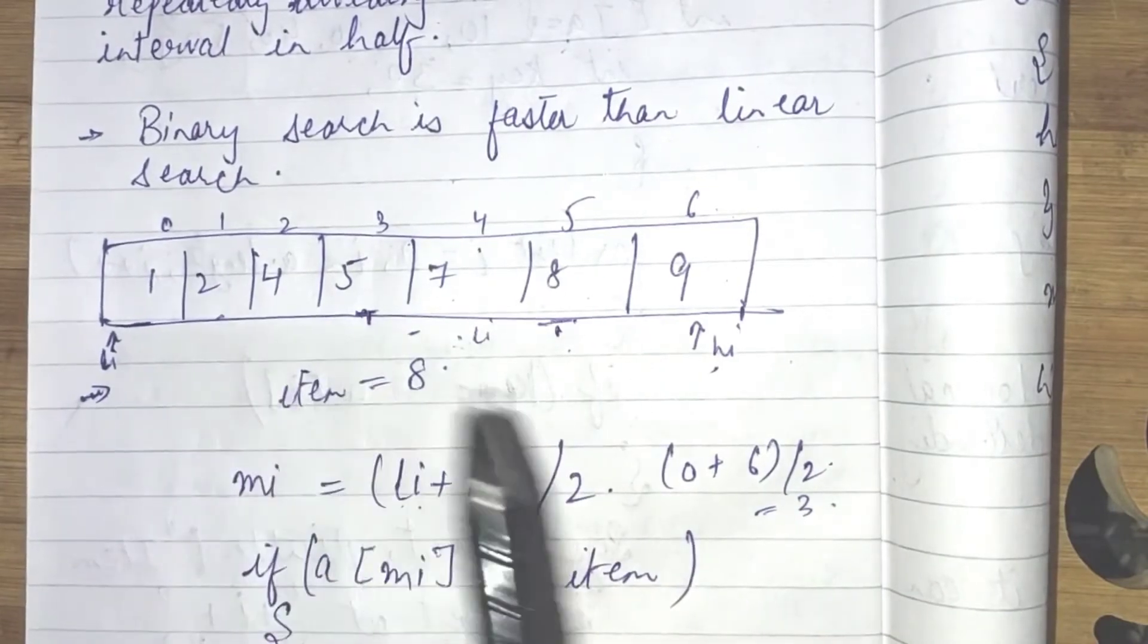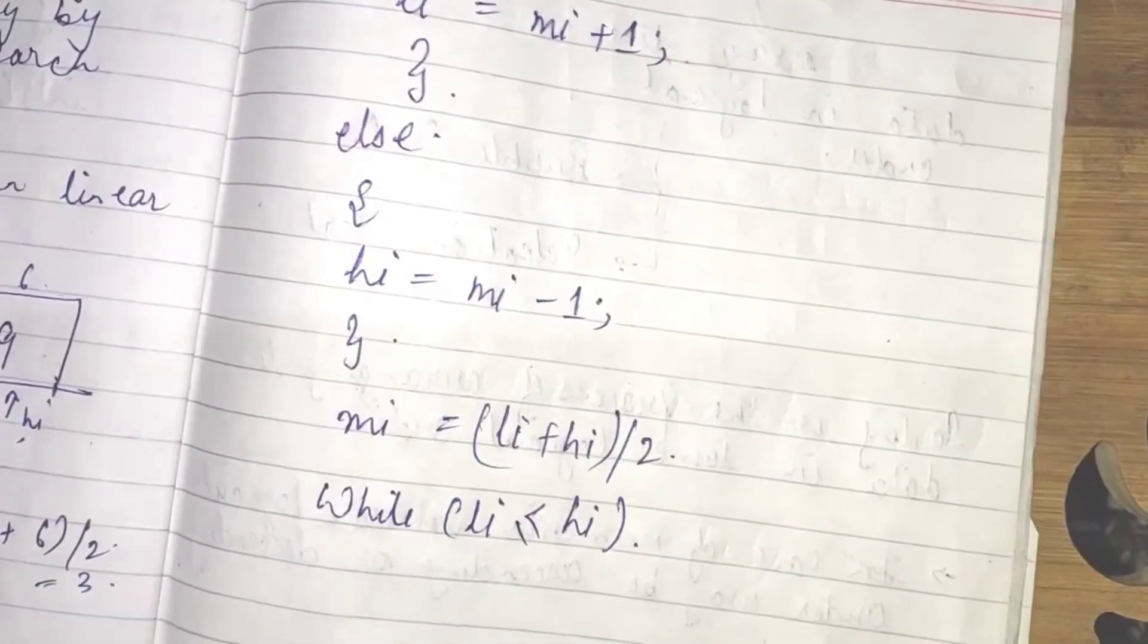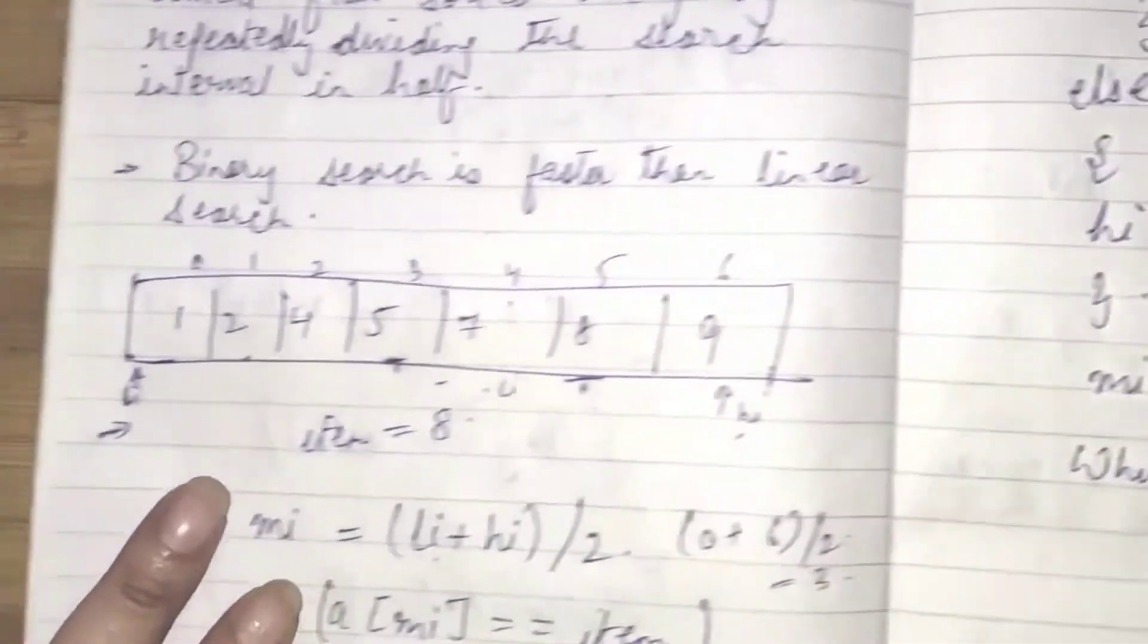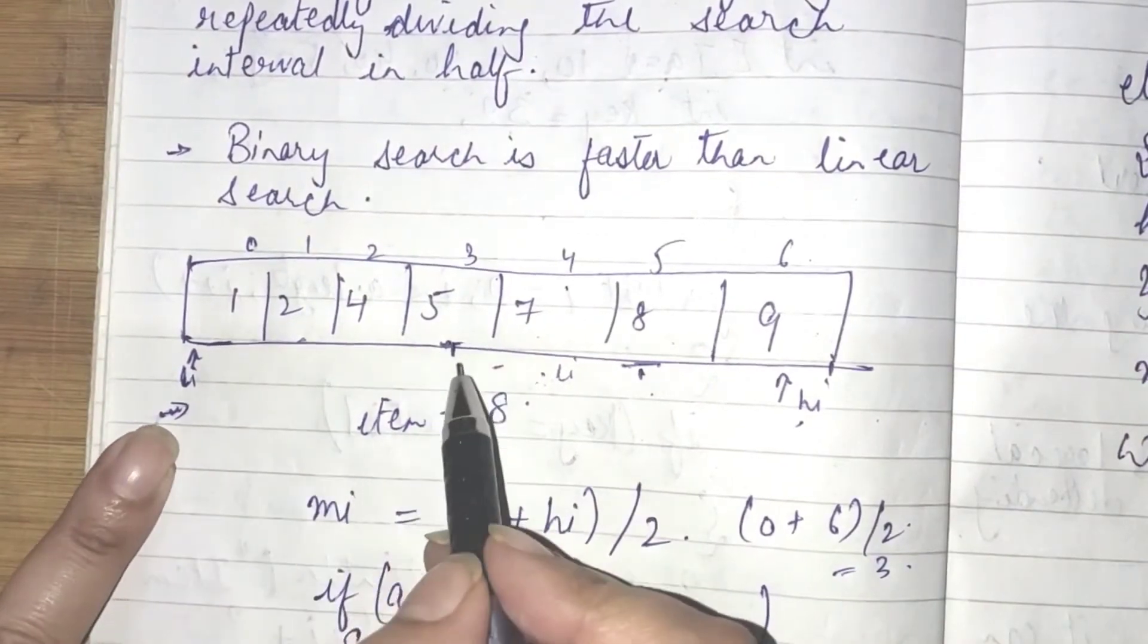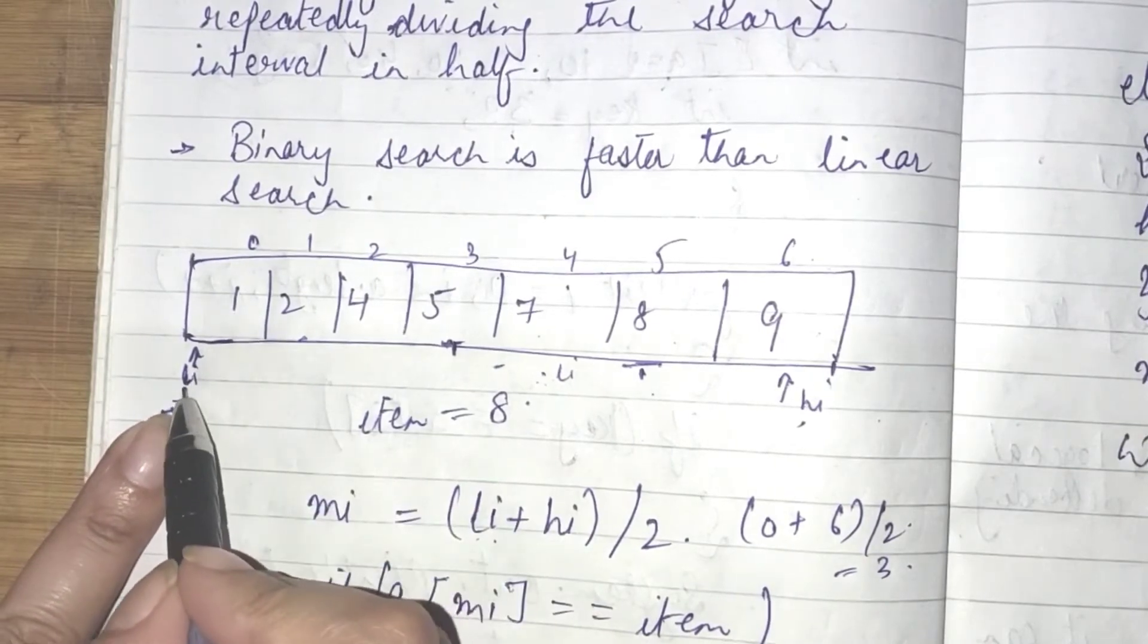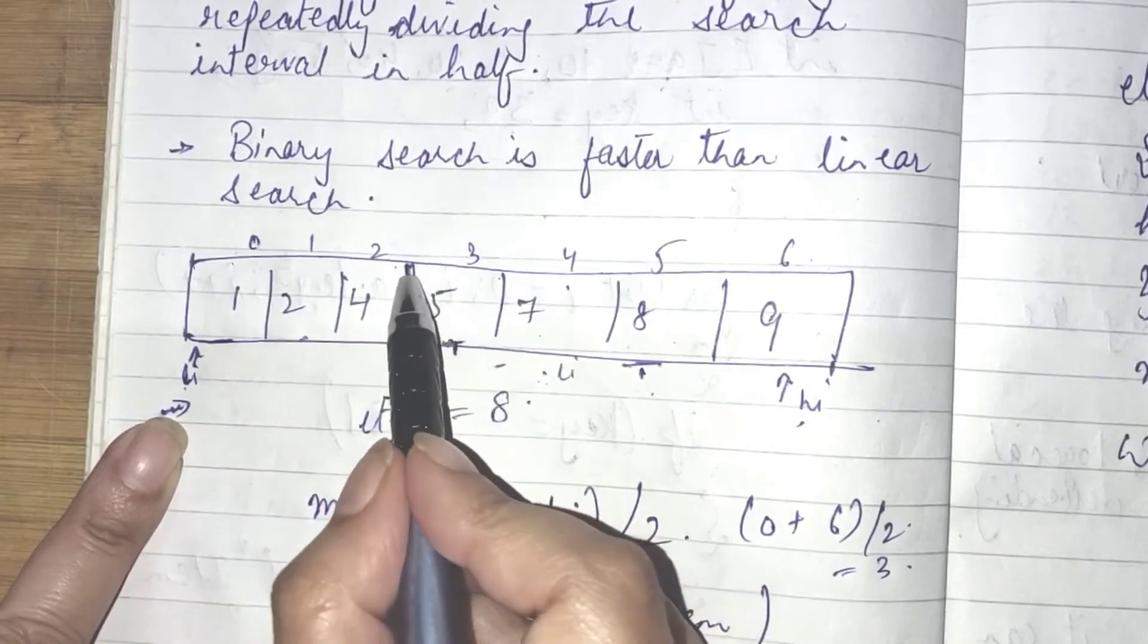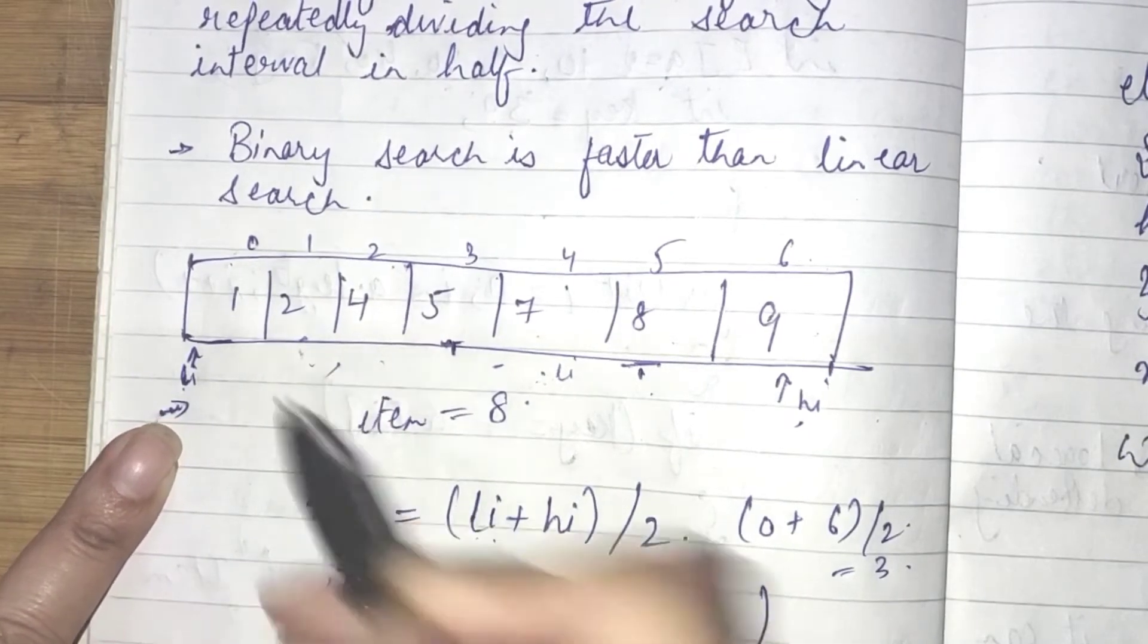In case, if I want to search 2, then, what we are going to do, we will add 1 element with middle item. Now, look at here, in this sequence, that was our middle value. Now, it will search from 0 to 2. And then, again, we will find the middle item and we will get our output.